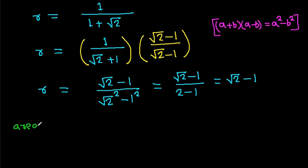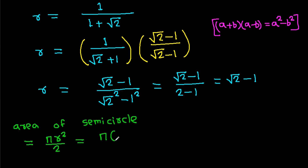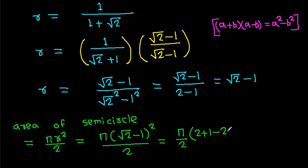So the area of the semicircle equals pi r squared over 2, which is pi over 2 times (root 2 minus 1) squared, giving pi over 2 times (3 minus 2 root 2).